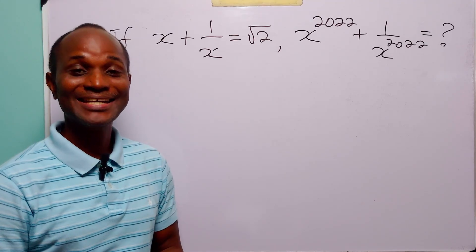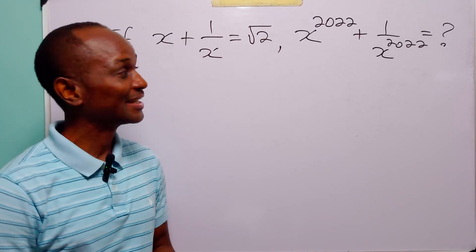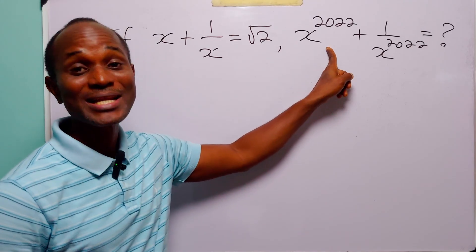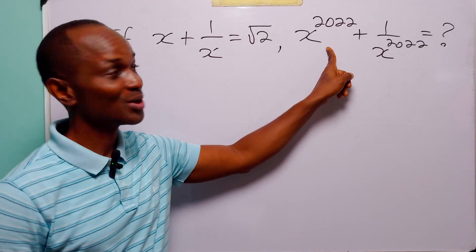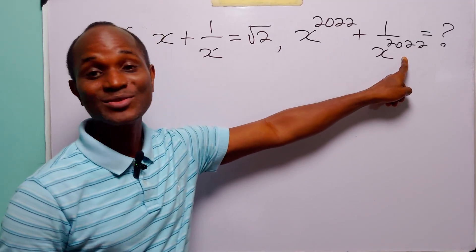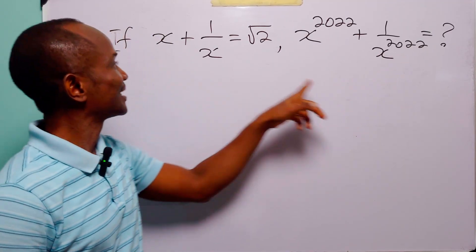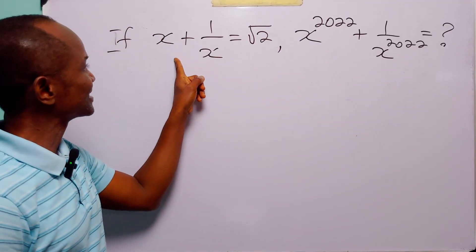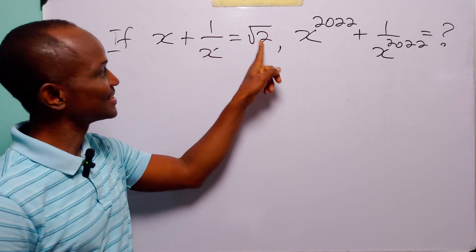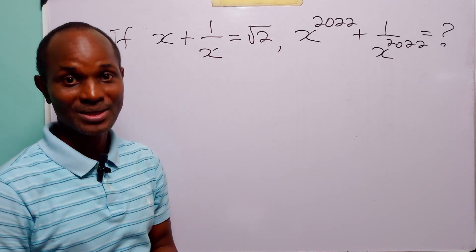Hello and welcome. In this small tutorial, our task is to find the value of x to the power 2022 plus 1 over x to the power 2022, given that x plus 1 over x is equal to root 2.